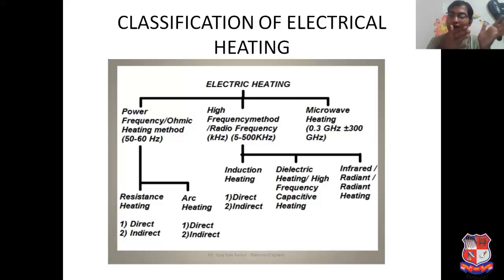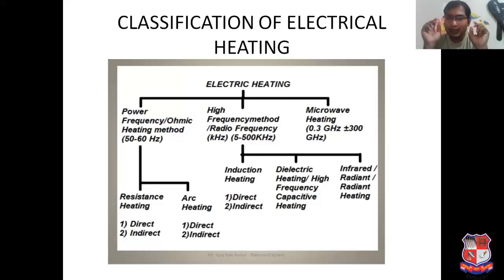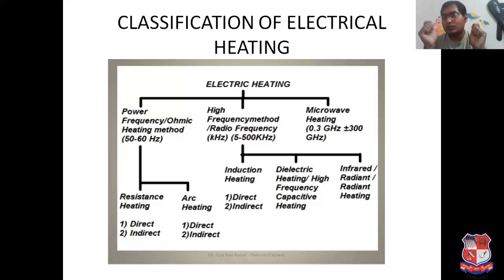If you compare resistance heating, there the heating is dependent on current. We don't require very high voltage — we require only current. If you can get that current from very low voltage, it is still possible to get resistance heating. That is the very fundamental difference between these two: resistance heating is mostly dependent on current, while arc heating is dependent on voltage.